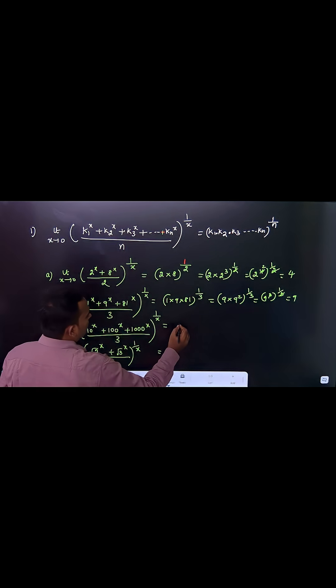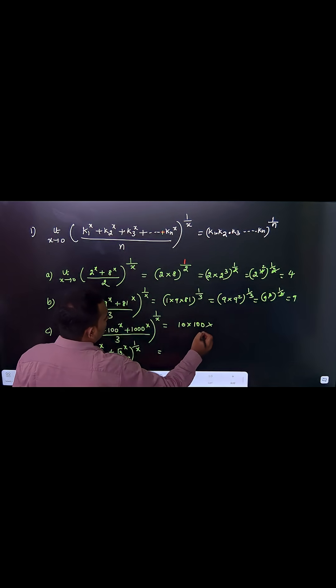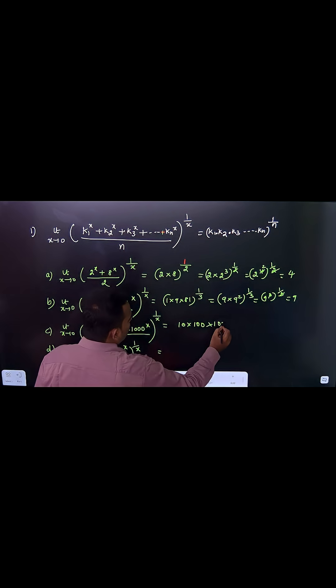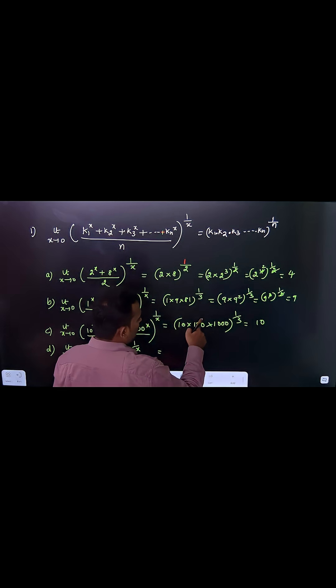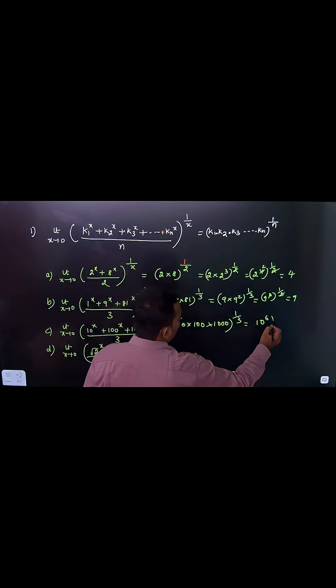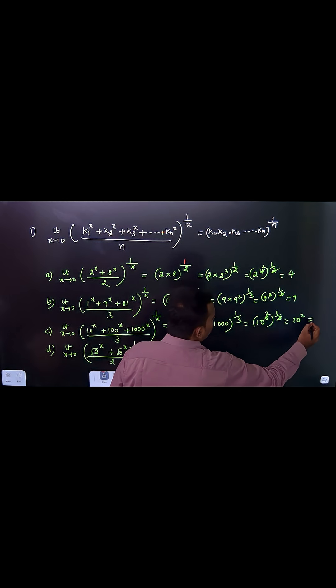The third one: you can see 10 times 10... 100 times 1000, raised to the power 1/3. This is 10, 10^2, 10^3, so 10^6 raised to the power 1/3. This gives 10^2, which is 100.